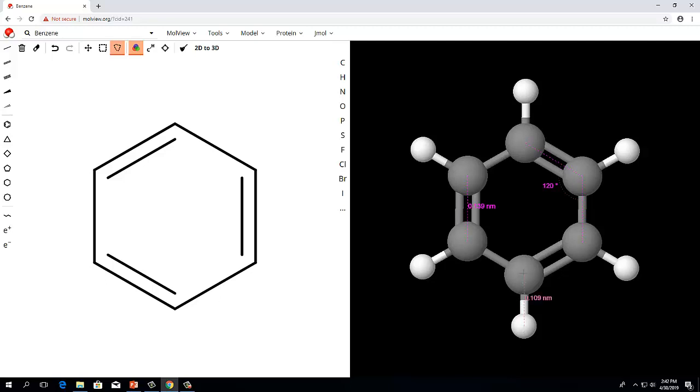Suppose we want to measure the dihedral angle formed by two hydrogen atoms and the carbons to which they are both bonded in benzene. We would select one of the hydrogens, then its carbon atom, the carbon atom next door, and its hydrogen to define the torsion angle as shown here. For a planar molecule, these angles should always be 0 degrees or 180 degrees.